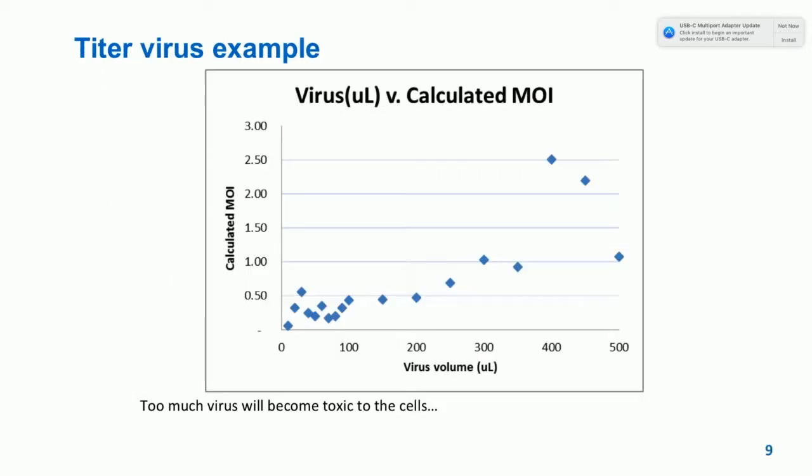Be aware that adding too much virus will eventually kill your cells. I cannot stress this enough: always titer your virus on the cells that you will actually work with — it will save you a lot of headaches. Be wary of over-transducing your cells. By the time you start your screen, you should have added enough virus to have one particle of virus per cell, and that should give you about 60% killing after you add selection to your screen.